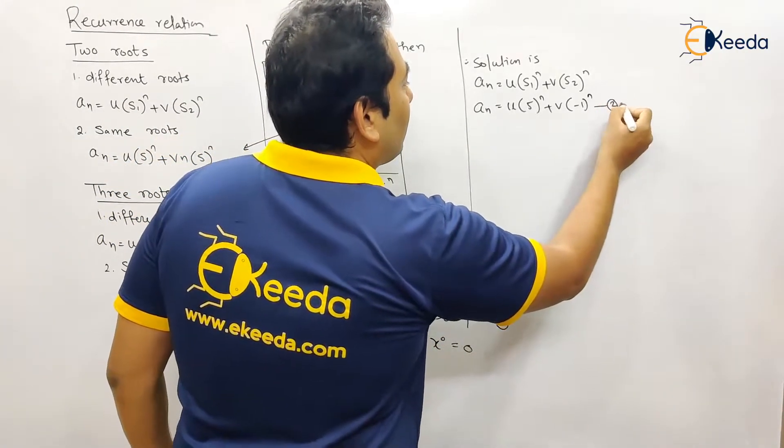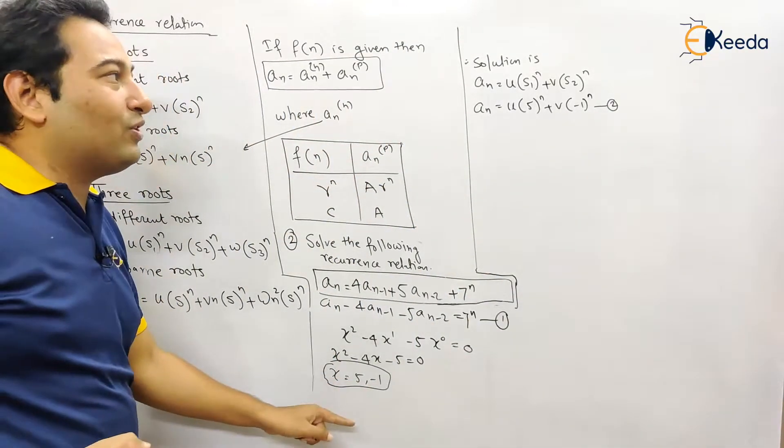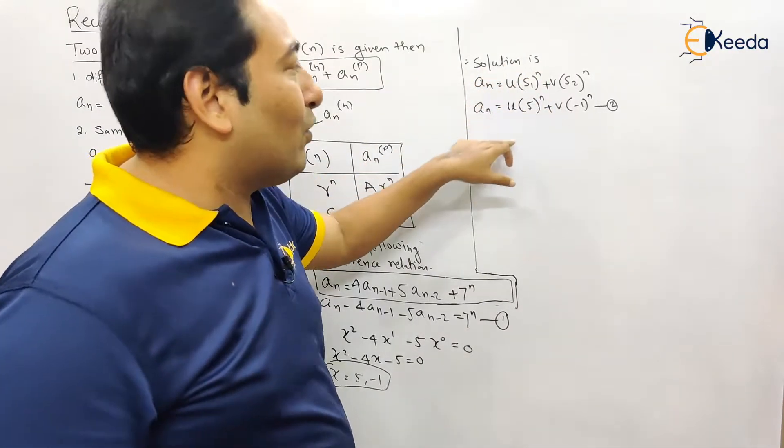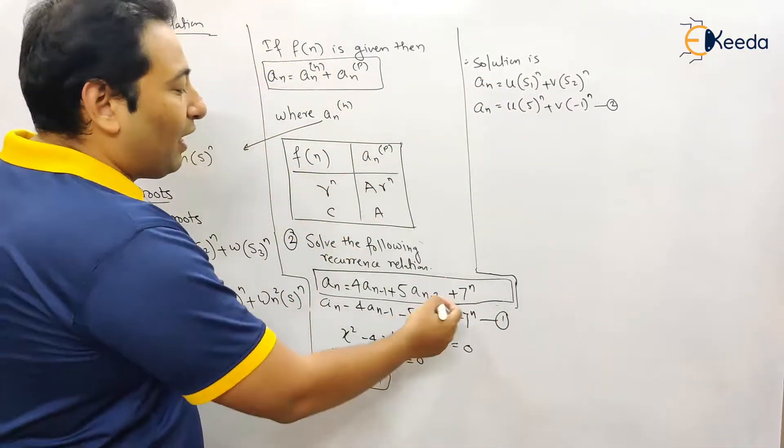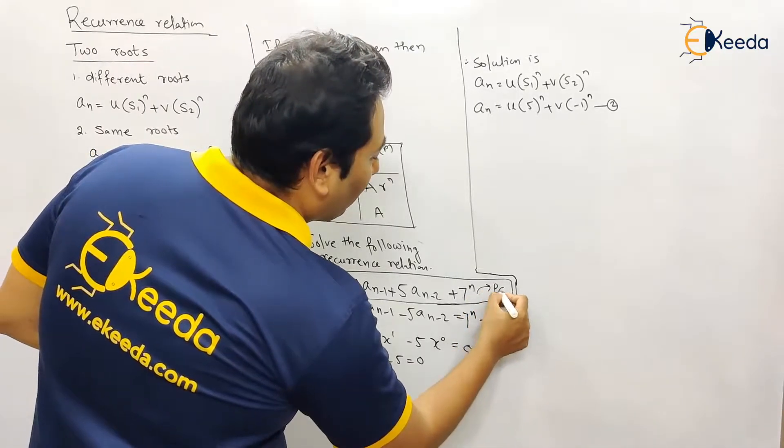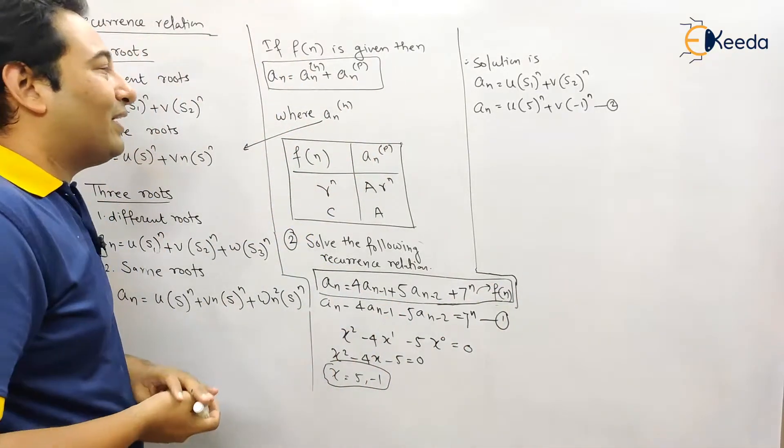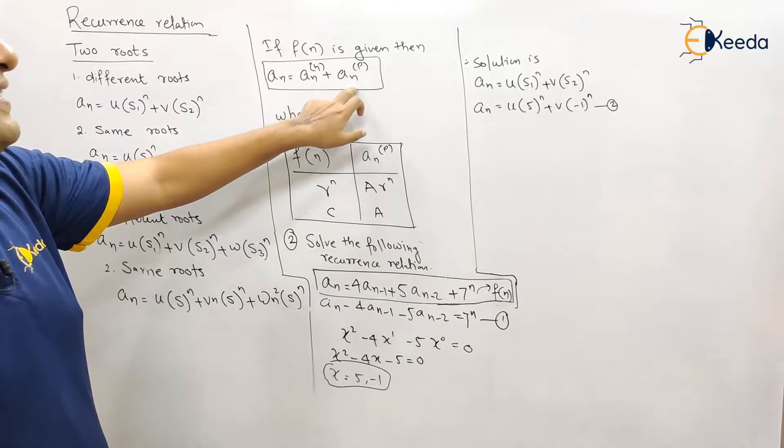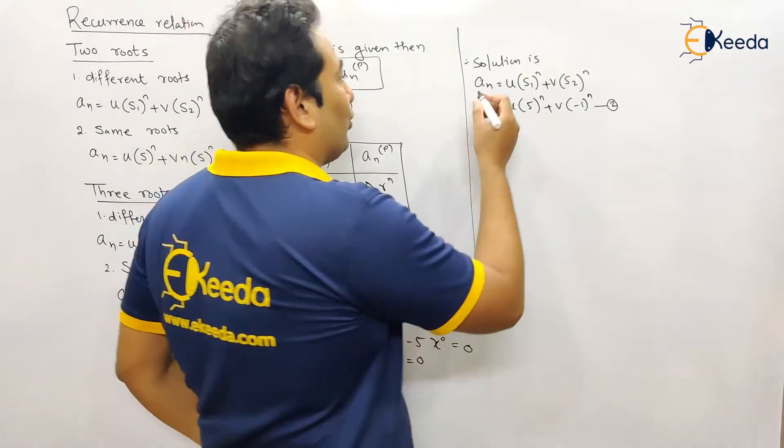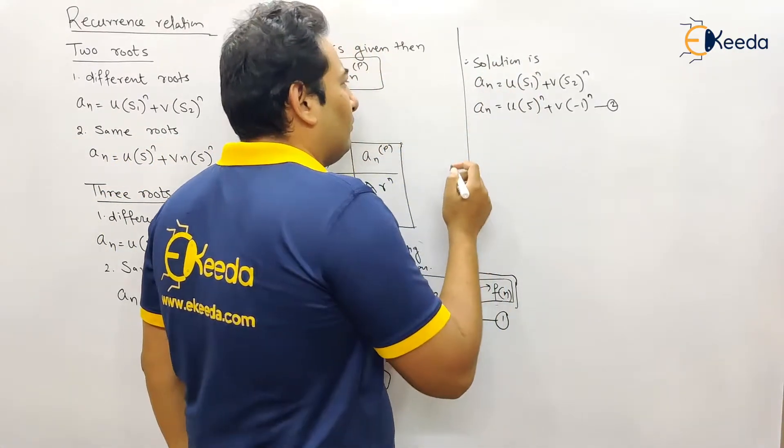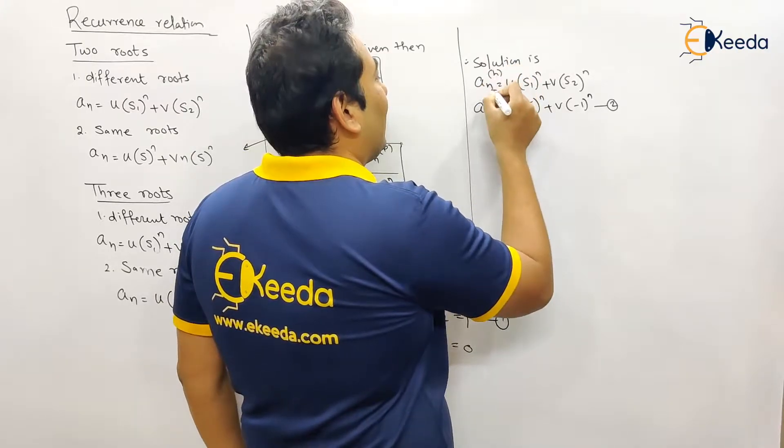And since there are two roots, your solution is a_n is equal to this. But in that case if we have f of n, then the solution becomes a_nh plus a_np. So in that case this solution is not the final solution. This solution is a_nh, it's not final solution.